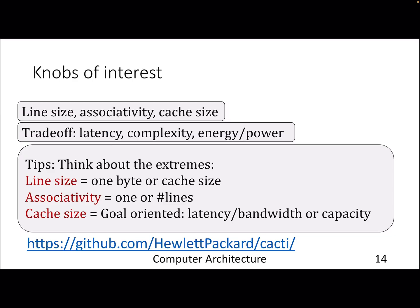There are various parameters of interest: what will be the size of a line, how much associativity, what will be the size of a cache. These have trade-offs in terms of latency, complexity, area, energy and power. There is a tool called Cacti — go download it from the GitHub link — and you can see how these things change when you change your line size, associativity, or cache size. This will be useful for the upcoming lab where you will deal with optimizing or understanding cache hierarchy for various kinds of applications.